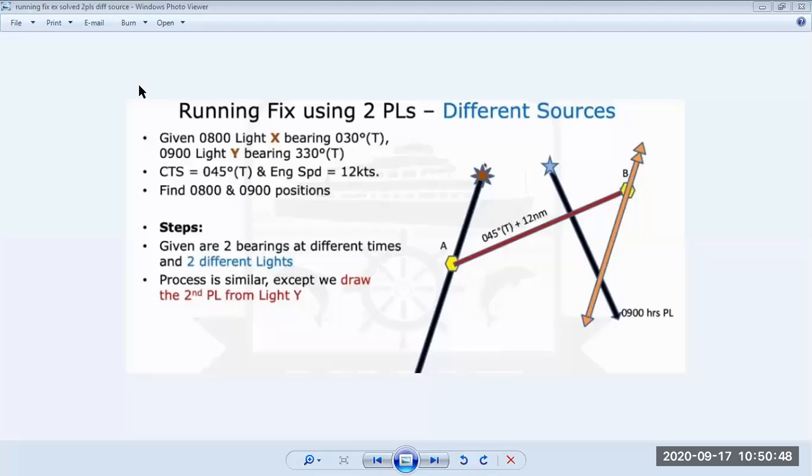This is the question for running fix of two position lines with two different sources. We have Lighthouse X bearing at 0800, bearing 030°. So this is Lighthouse X and it is bearing 030° at 0800.